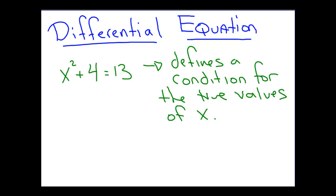This object basically defines a condition for the true values. So what this equation does is it gives us a rule or condition that x must satisfy in order to be the x that we're actually looking for. And in your algebra class, you know how to go through and solve a problem like this.